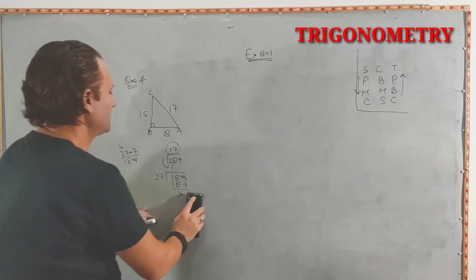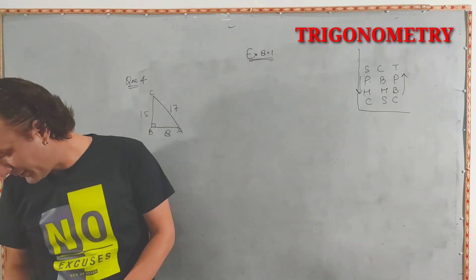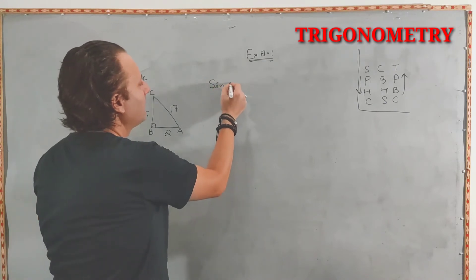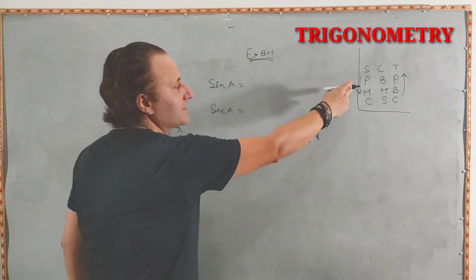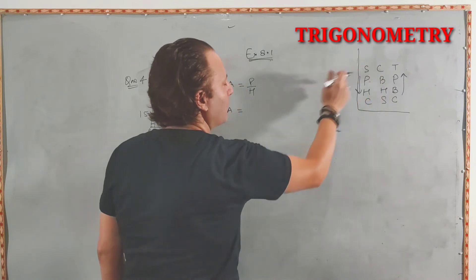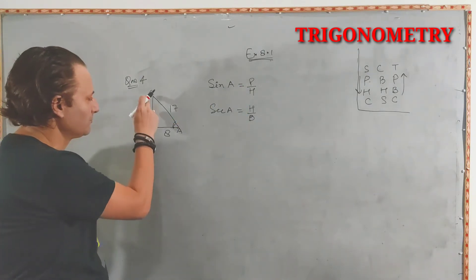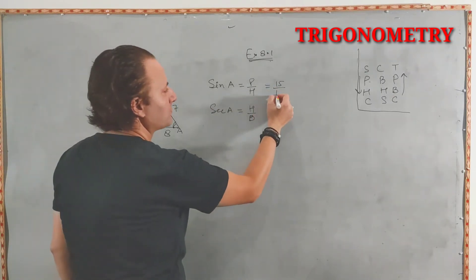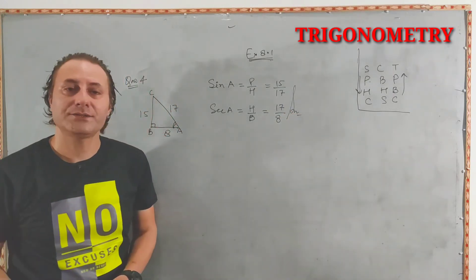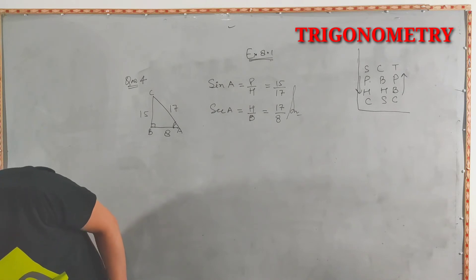I hope you are able to understand these questions — if you have doubts, please do comment. Now, the question asks us to find sin A and sec A. Sin A equals perpendicular upon hypotenuse — perpendicular is 15 and hypotenuse is 17, so sin A equals 15 upon 17. Sec A equals hypotenuse upon base — that is 17 upon 8.